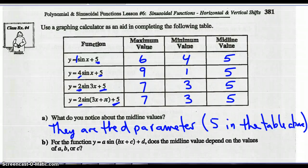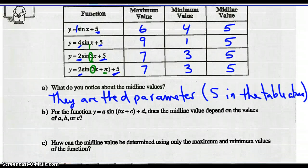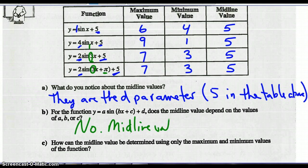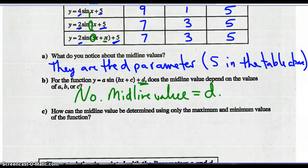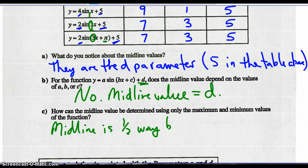Notice that the b value and the c value do not change the max, min, or vertical shift. So for the function a sine(bx + c) + d, the midline value does not depend on a, b, or c. Midline value equals d and d only. The midline can be determined as halfway between the max and the min.